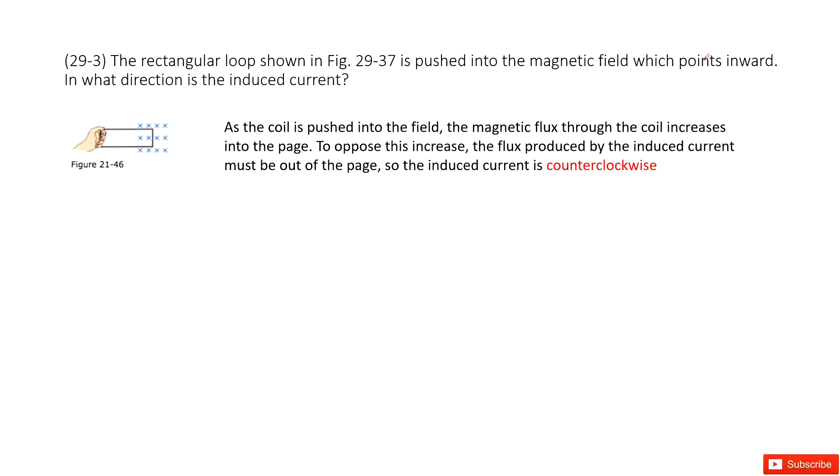So now, the magnetic field is inward. The opposite direction will be outward. So you can see the magnetic field produced by this loop should be outward.